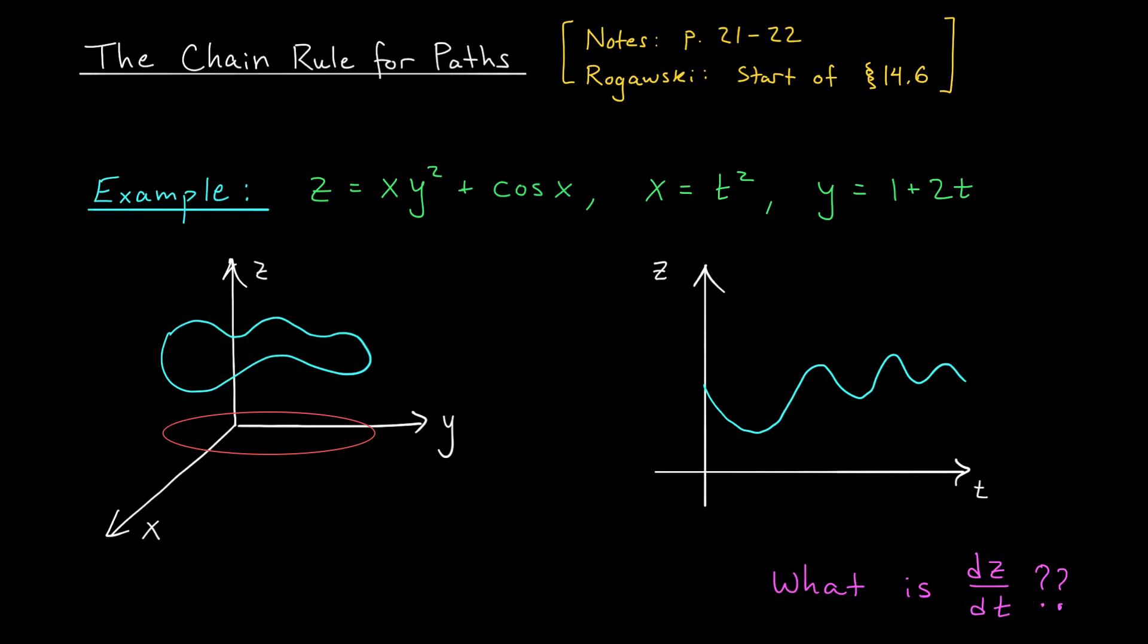This isn't a partial derivative anymore. We're thinking of z as a function of just one variable. So this is a total derivative like you knew from calc 1. Now, one way that we could compute this derivative is by taking these expressions for x and y and substituting them back into this expression. That would give us z as a function of t. Then we could take the derivative as normal.